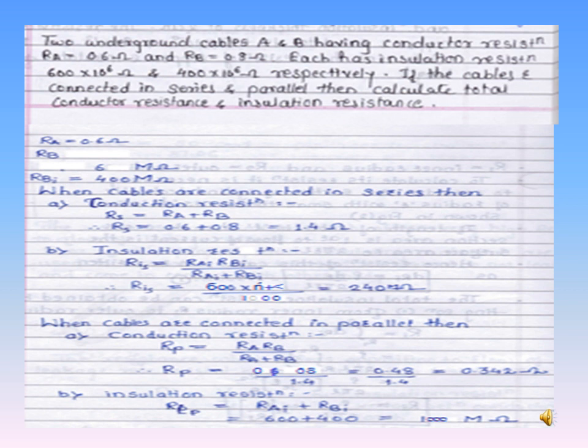If cables A and B are connected in series, the total conductor resistance = 0.6 + 0.8 = 1.4 Ω. The effective insulation resistance, being in parallel, = (600 × 400) / (600 + 400) MΩ. Similarly, if the two cables are connected in parallel, their insulation resistances are in series and their conductor resistances are in parallel.